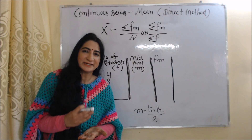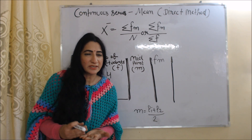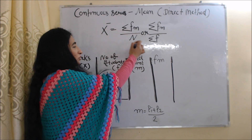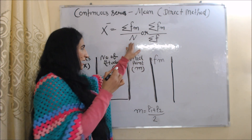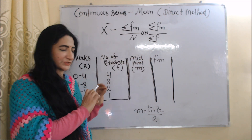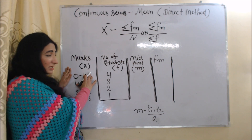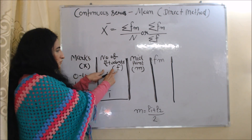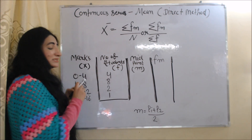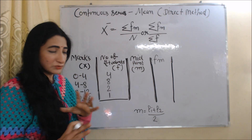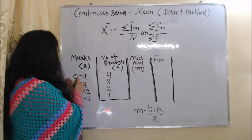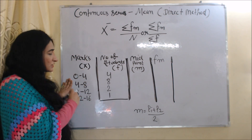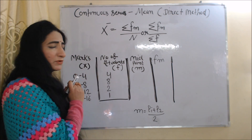Now we are going to talk about mean by direct method in continuous series. The formula is x̄ = Σfm / n, or Σfm / Σf — n and Σf are the same. In the first column, marks of students are given; in the second column, number of students are given. We can identify a continuous series by class intervals, such as 0–4, 4–8, 8–12, 12–16. If these kinds of class intervals are given, this is a continuous series.